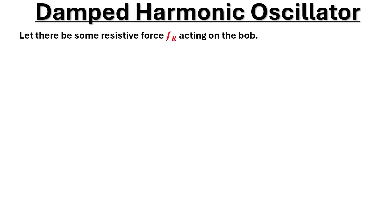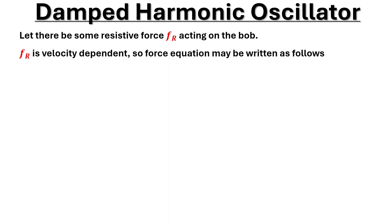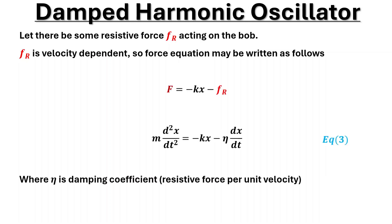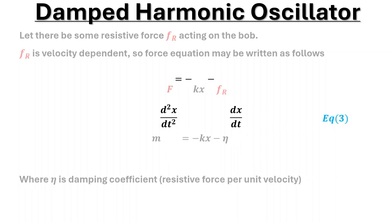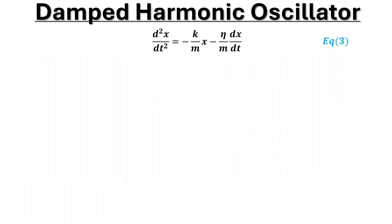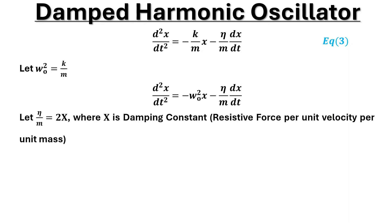Let there be some resistive force fr acting on the bob. Fr is velocity dependent. So the force equation may be written as F = -kx - η·ẋ, where η is the damping coefficient, which is resistive force per unit velocity. Let ω₀² equal k over m. Let η over m equal 2γ, where γ is the damping constant — resistive force per unit velocity per unit mass.